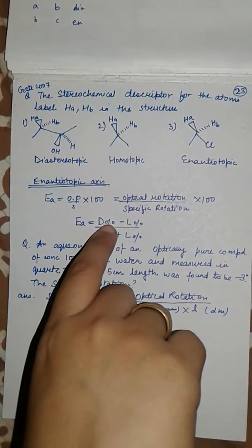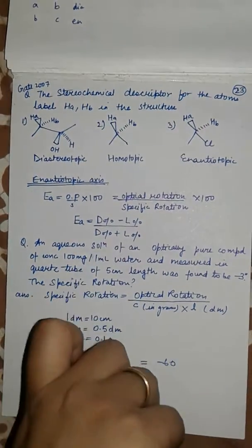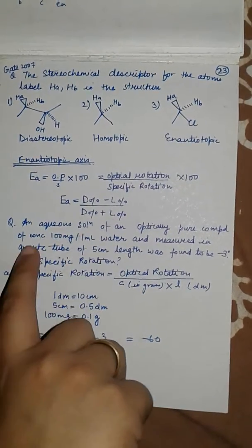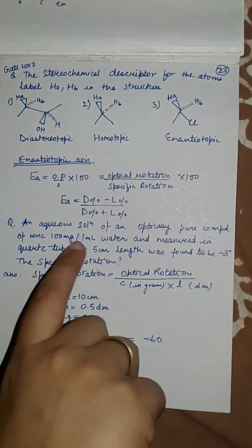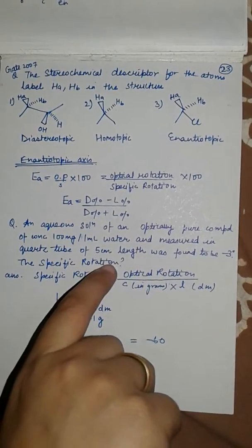Question: An aqueous solution of an optically pure compound of concentration 100 milligram per 1 ml water, measured in a quartz tube of 5 centimeter length, was found to be minus 3 degrees. What is the specific rotation?